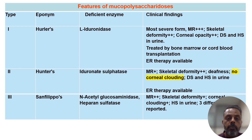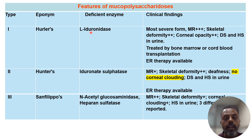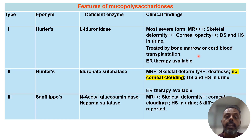Type 1 mucopolysaccharidosis is Hurler's syndrome. The enzyme deficient in Hurler's syndrome is alpha-L-iduronidase. It is the most severe form of mucopolysaccharidosis, with an incidence of 1 in 100,000 live births. It is associated with severe mental retardation, severe skeletal deformity, and corneal opacity. There is excretion of dermatan sulfate and heparan sulfate in the urine. Treatment includes bone marrow or cord blood transplantation, and enzyme replacement therapy is also available.